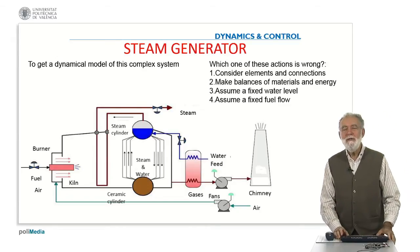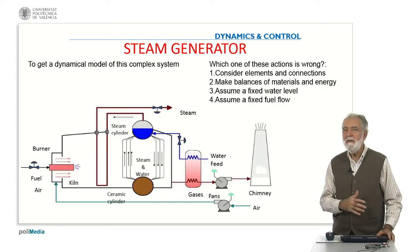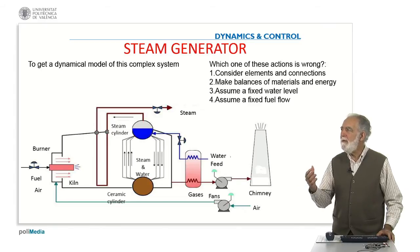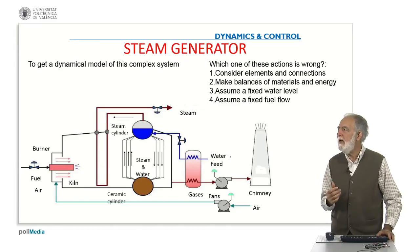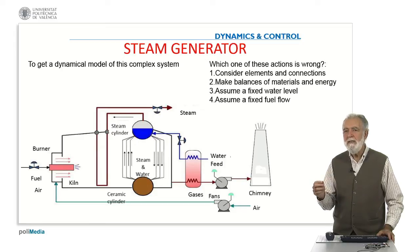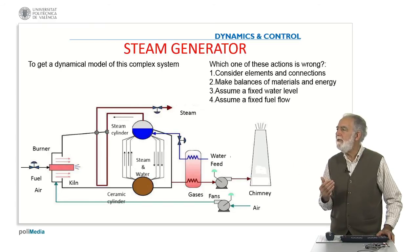Welcome back to this last question in module 2 about how we can get a model of a complex system. To get the model of a system, we cannot consider everything all together — we must consider element by element and the interconnections between them. To get a model, we are expressing balances of forces, energy, moments, and in general materials and energy.